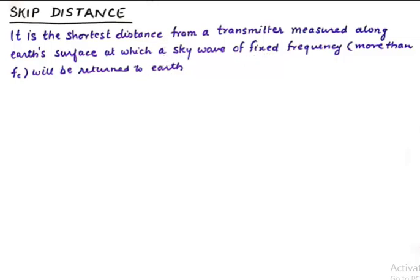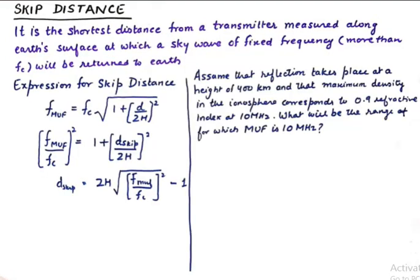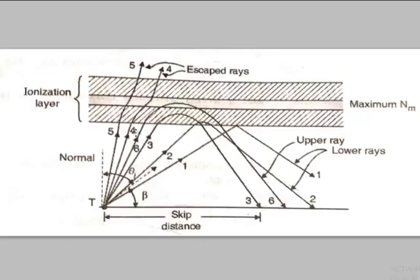Now let's understand this with a suitable diagram. Now we are talking about a frequency which is greater than FC, so any frequency greater than FC needs to be sent at some incident angle, but we need to make sure that what is the frequency that will give me the shortest skip distance.